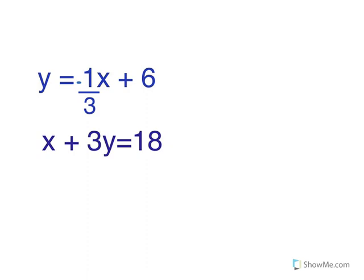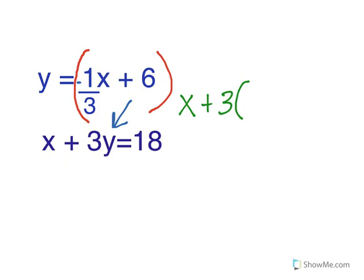So on this system, you already have that y equals negative one-third x plus 6. So you can use this to plug in to the second equation. You'll write the second equation, which is x plus 3, and instead of y, we're going to put what y equals — negative one-third x plus 6.